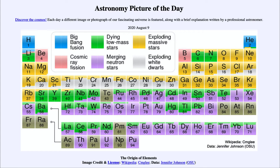The gray color represents exploding white dwarf stars, which create a lot of things like iron, copper, and nickel — metals that we use every day.